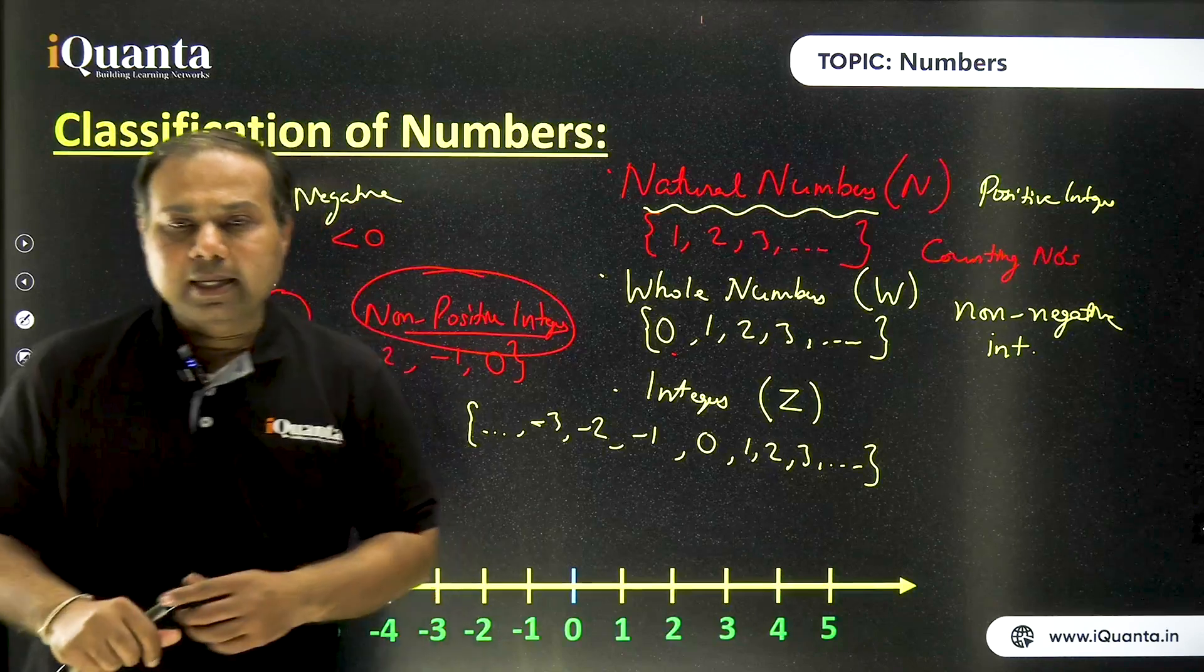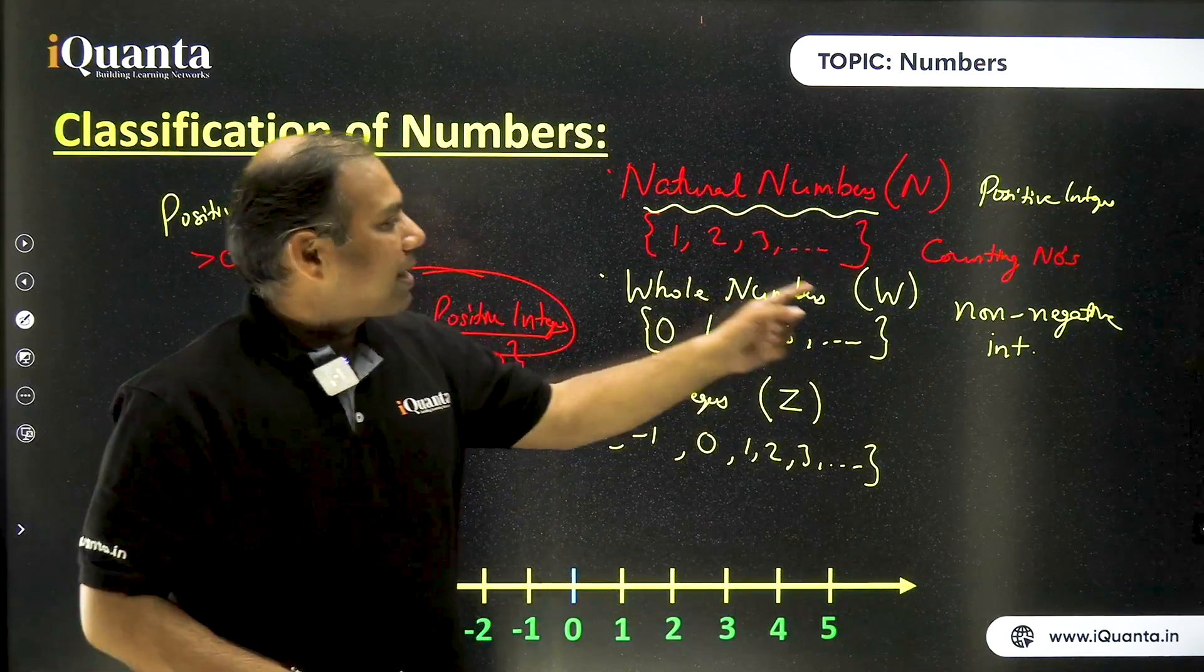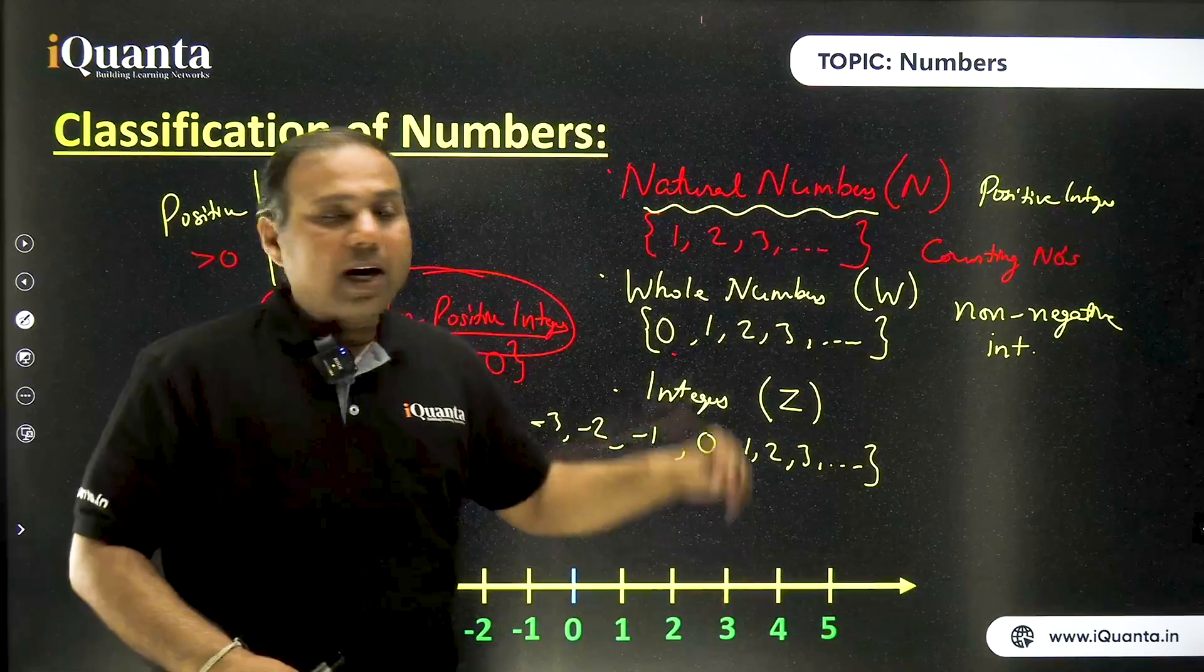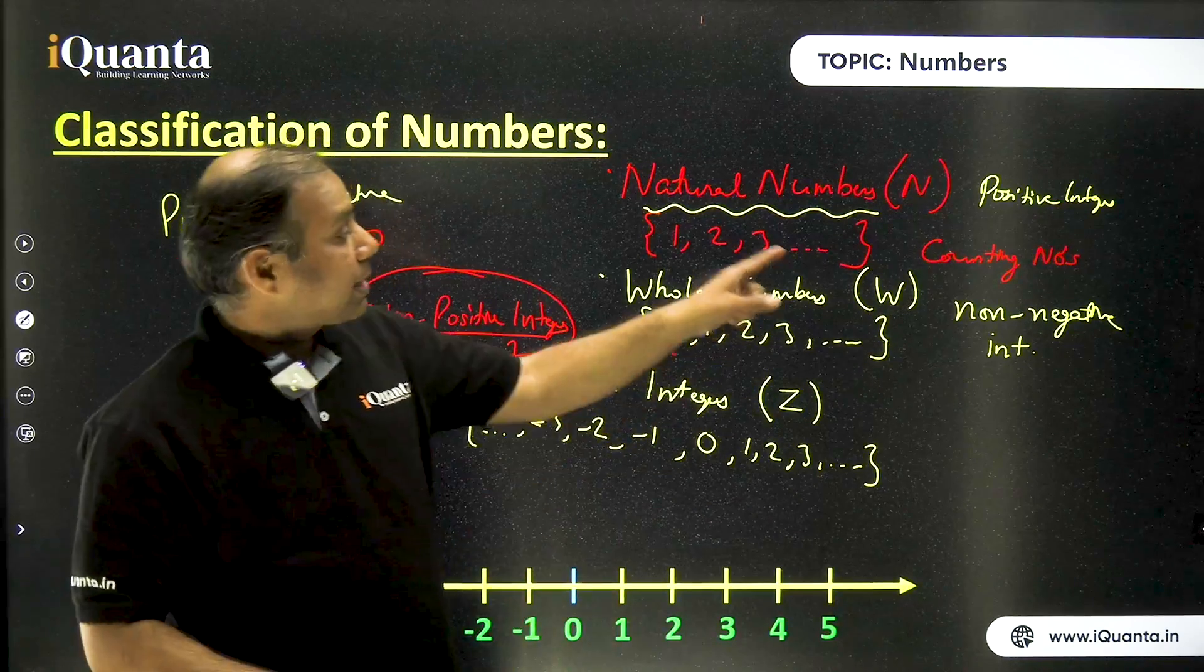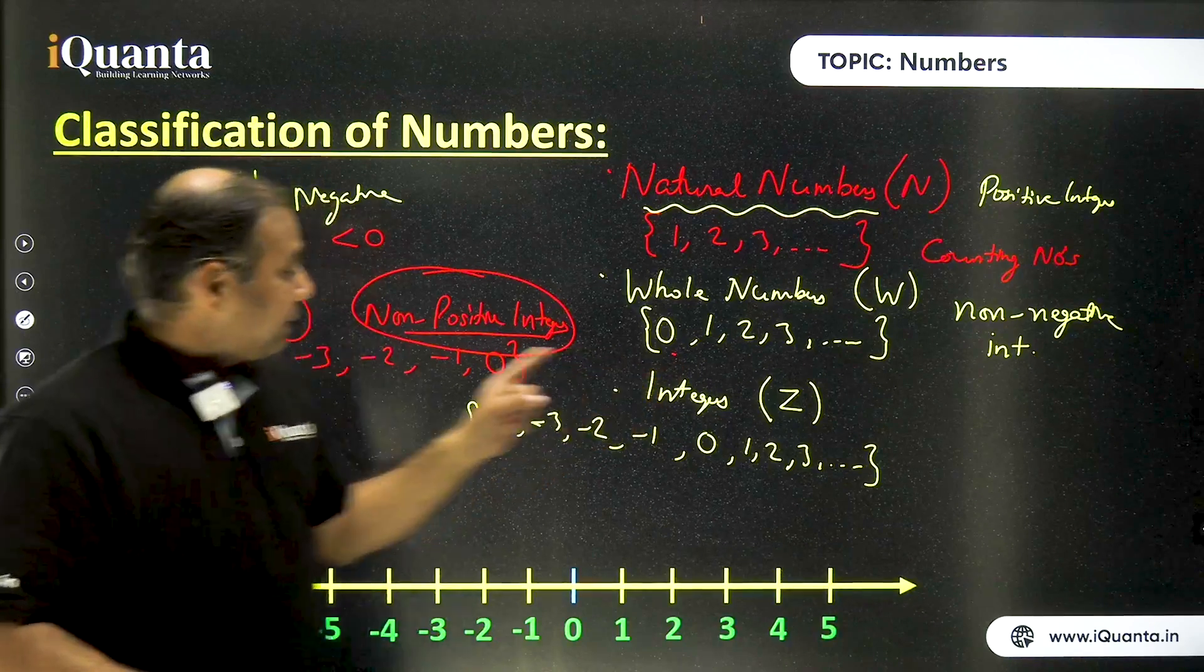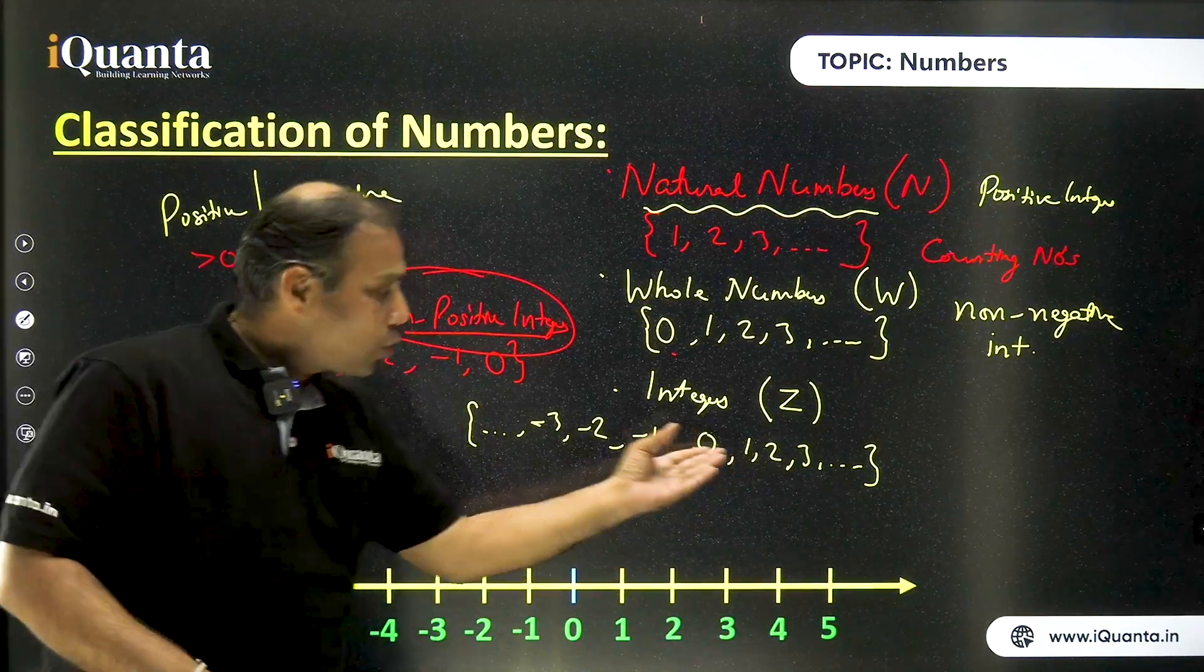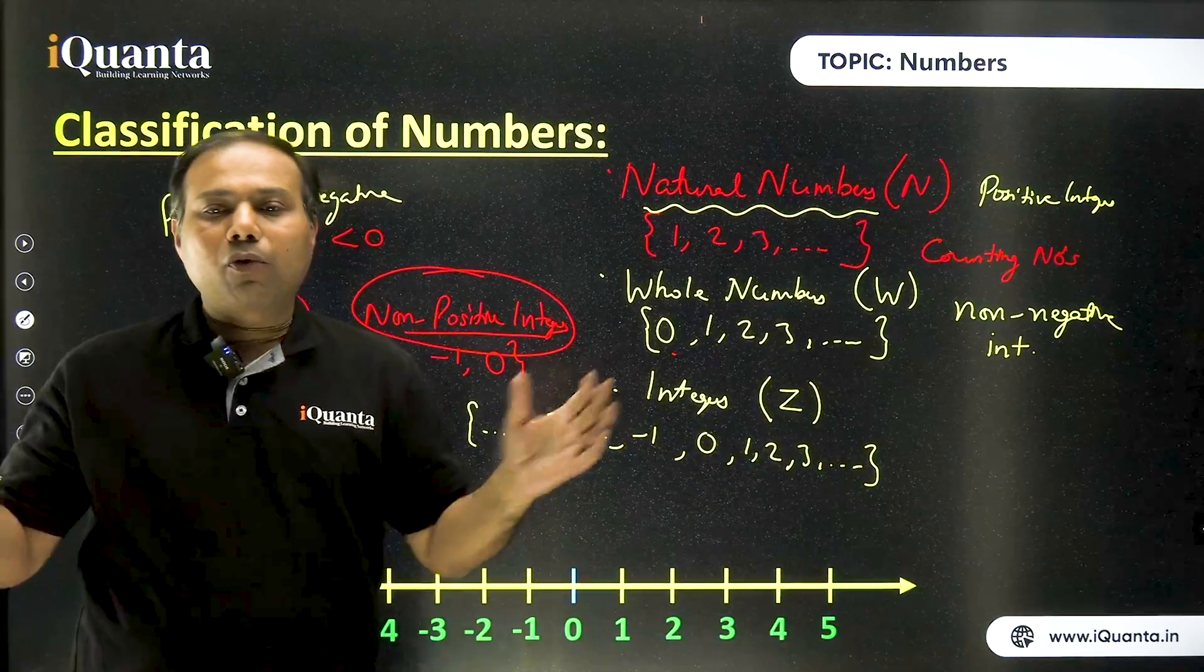Now note one important thing here. I have put dots in all these brackets for natural numbers, whole numbers, as well as integers. What does it mean? It clearly means that there is no last number. There are infinite many natural numbers. There are infinite many whole numbers. There is a smallest natural number. There is a smallest whole number. There is the largest non-positive integer. But in case of integers, when we are talking about it, there is no smallest integer and there is no largest integer. Total number of integers are infinite.